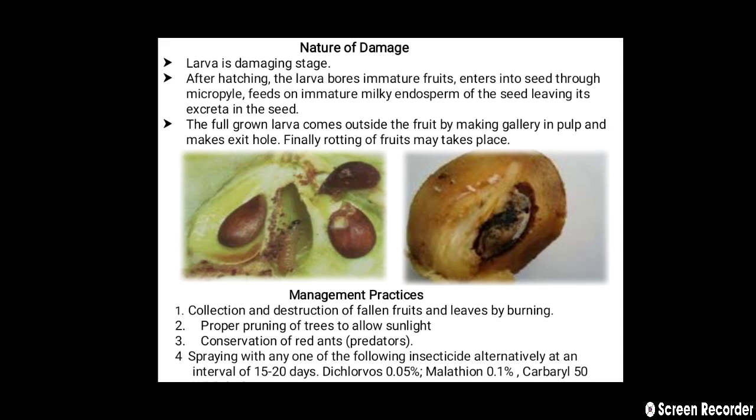The next point is the nature of damage. The larva is the damaging stage. After hatching, the larva bores into immature fruits and enters the seed through the micropyle. It feeds on the immature milky endosperm of the seed, leaving excreta in the seed. The full-grown larva comes outside the fruit by making a gallery in the pulp and makes an exit hole. Finally, rotting of fruits may take place.